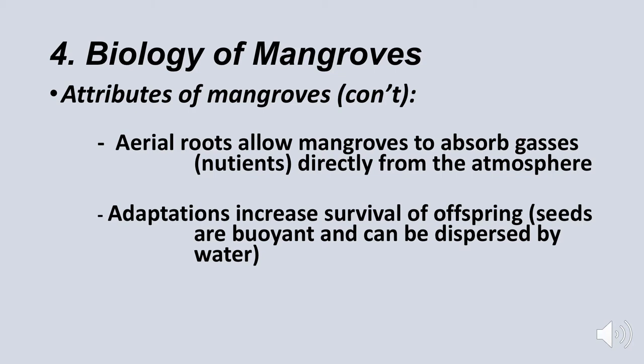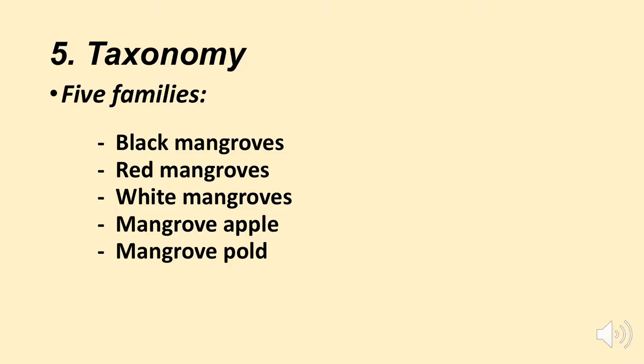Humans usually know mangroves by color, though it's not very obvious. There are five families of mangroves: the black mangroves, the red mangroves, the white mangroves, and the mangrove apples. When you go into a black or red mangrove forest it's not obvious what's black and what's red unless you're a taxonomist.